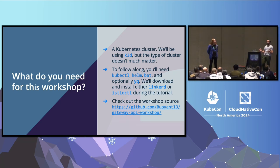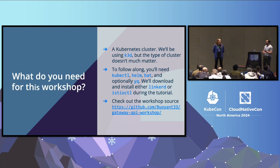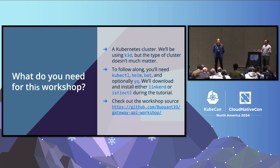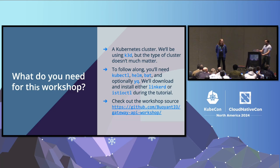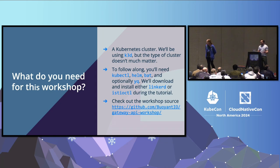What are you going to need for this? You're going to need a Kubernetes cluster — we're using K3D for this demo, but any cluster should work. To follow along, you'll need kubectl, helm, bat, and if you want it, yq, just for viewing YAML in a slightly more pleasant way. We'll be downloading Linkerd and Istio CTL during this tutorial itself. If you want to check out the source of the workshop, it's github.com/io/gateway-api-workshop.